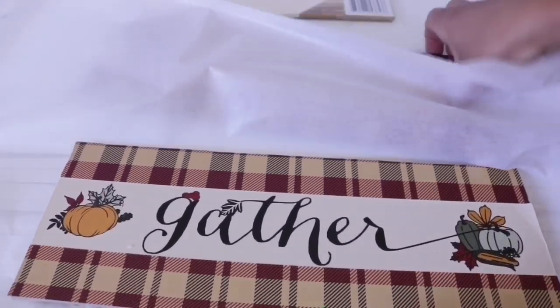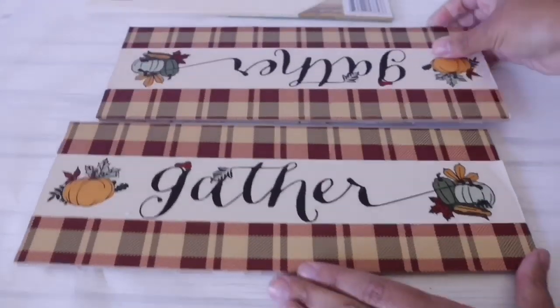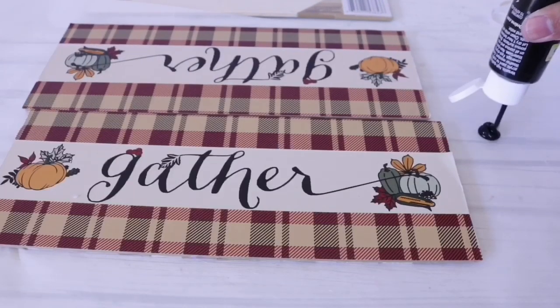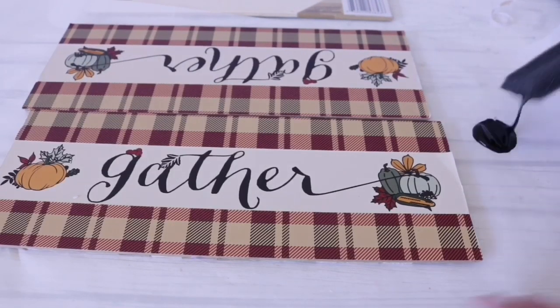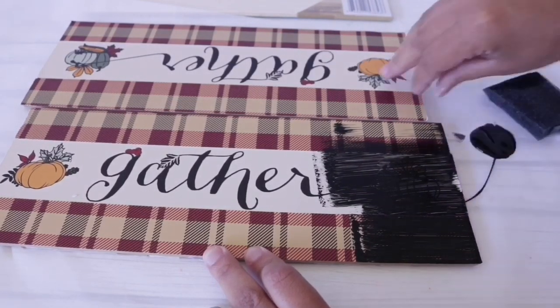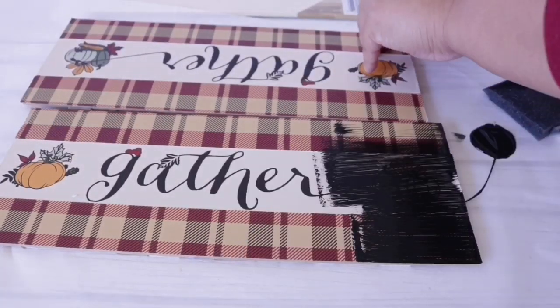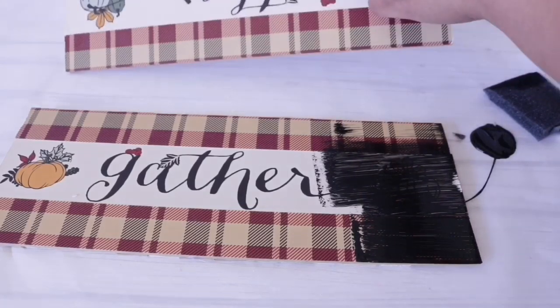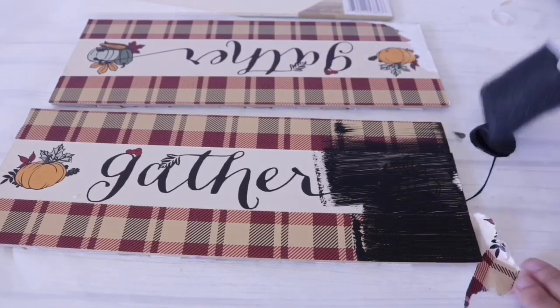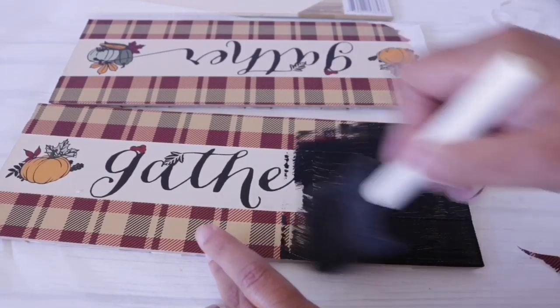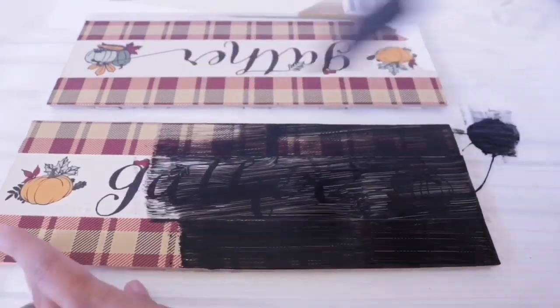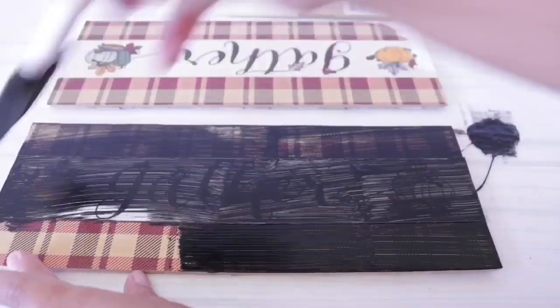What I'm going to do is paint the whole thing black. I'm putting this on parchment paper or wax paper, it doesn't matter. Then I'm going to cover the whole thing. The gather is actually a sticker you can remove, but that means you have to sand this down. I did try removing one piece and didn't like the bottom, so I'm just going to use it as is.